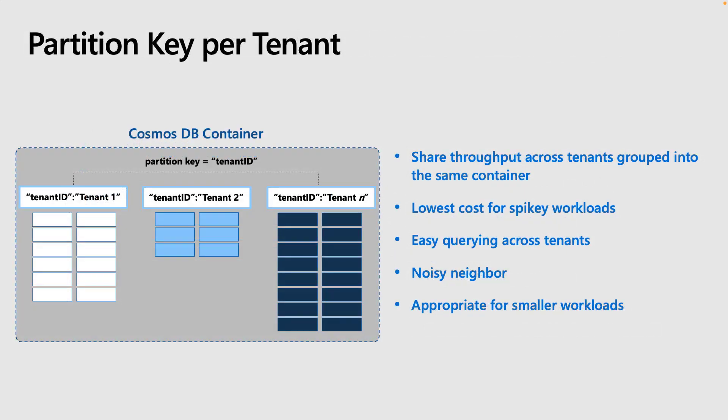The final option is putting all customers in the same container and partitioning them by some partition key — usually a tenant ID. This allows all customers to share the same resources. This model has the highest tenant density, making it very attractive from a cost perspective, and you get easy querying across tenants since the query boundary is the container. The big downside is that it is susceptible to noisy neighbor issues, and each logical partition is limited to 20 gigabytes. We typically recommend this model for smaller workloads such as B2C applications, where an individual tenant will have a small amount of data and access it somewhat infrequently.